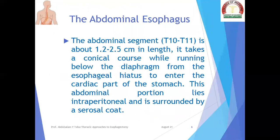The abdominal segment, T10 to T11, is about 1.2 to 2.5 centimeters in length. It takes a conical course while running below the diaphragm from the esophageal hiatus to enter the cardiac part of the stomach. The abdominal portion lies intraperitoneally and is surrounded by a serosal coat.